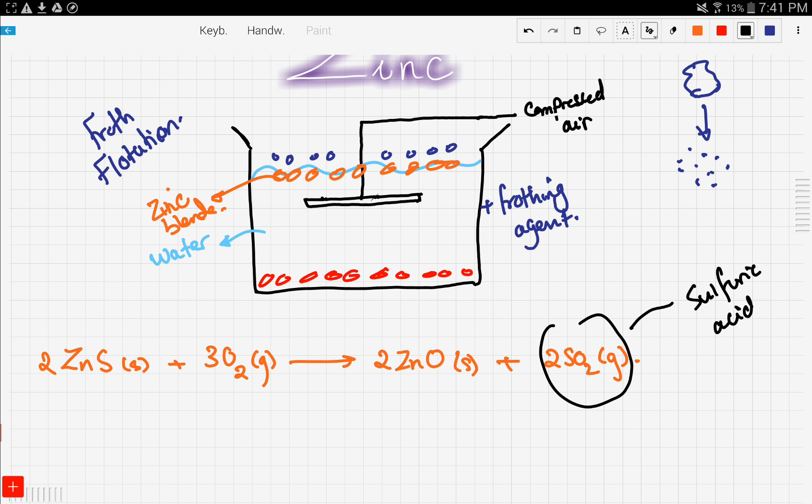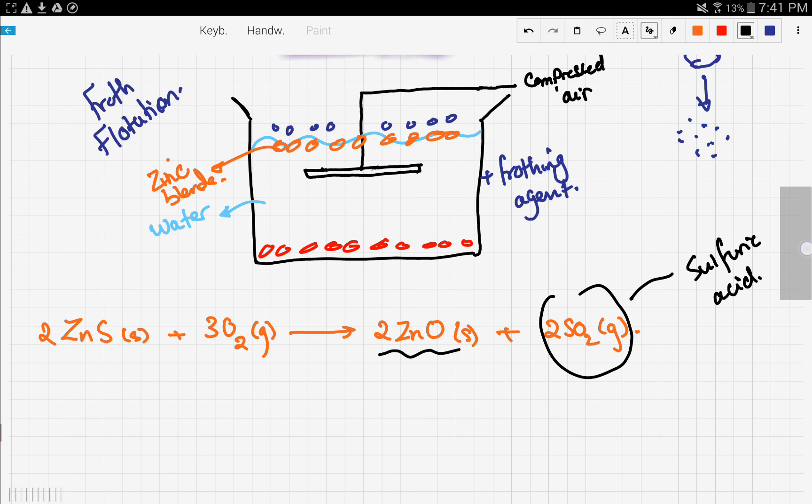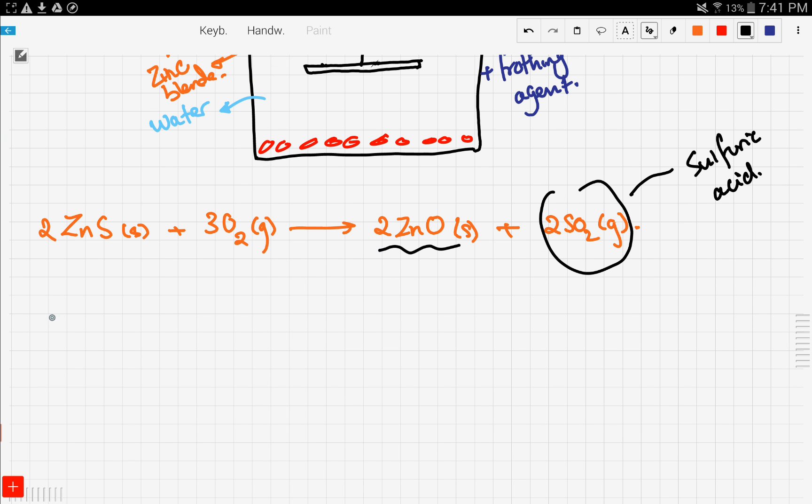Now, the next thing we take the zinc oxide and we reduce it in a blast furnace using coke. So the zinc oxide will react with coke in a blast furnace and would give zinc and carbon monoxide gas. And this is how we get zinc at the end.